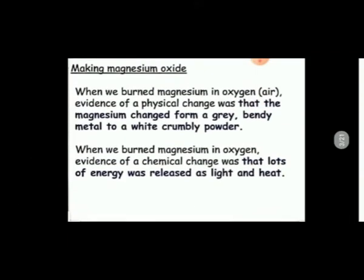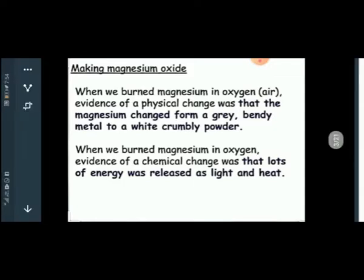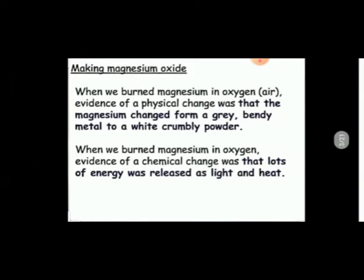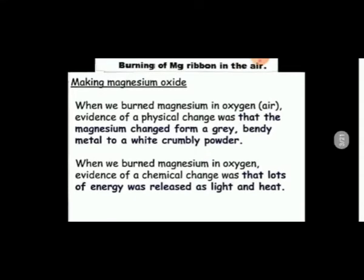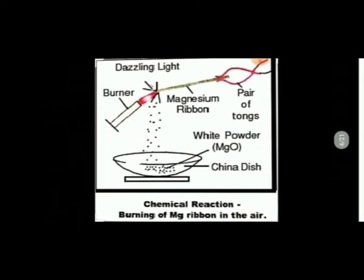Magnesium oxide is prepared when we burn magnesium in oxygen. Evidence of a physical change was that the magnesium changed from a grey, bendy metal to a white powder. Evidence of a chemical change was that lots of energy was released as light energy and heat energy.